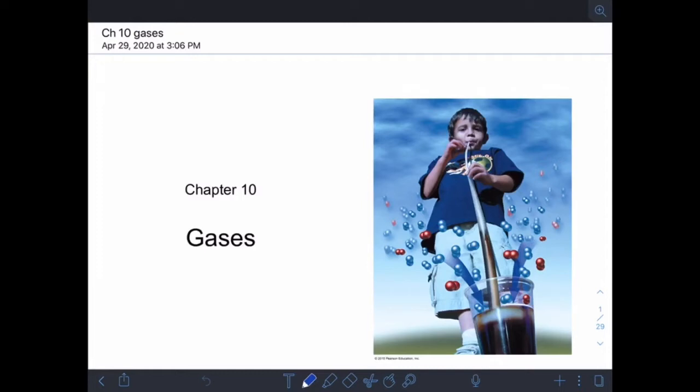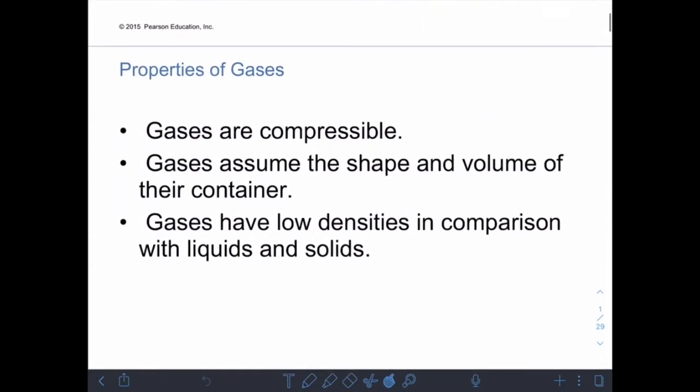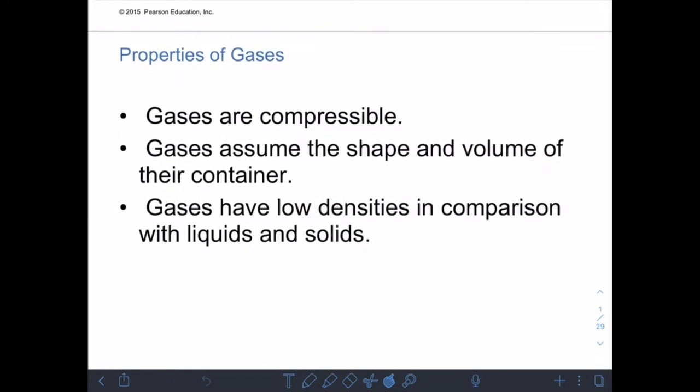Chapter 10 is all about gases, and gases have some basic properties that we've already talked about earlier in the semester when we discussed solids, liquids, and gases. To focus on the properties of gases themselves: one is that they're compressible, and the reason for that is because there's space between the molecules. Unlike solids and liquids, there's actually room between the molecules here, so you can move those molecules closer together, which means that gases are compressible. They assume the shape and volume of their container, and they have very low densities in comparison with liquids and solids.